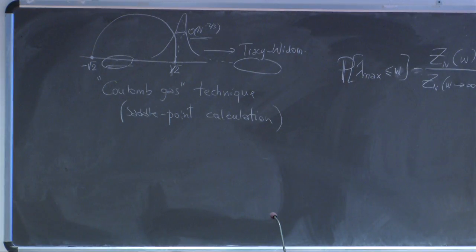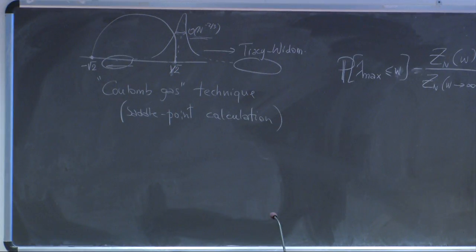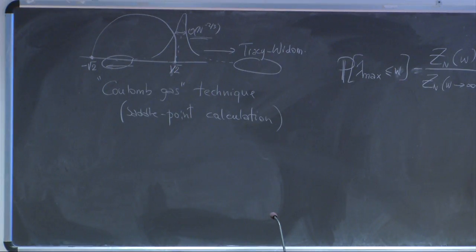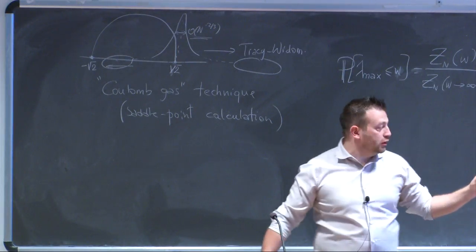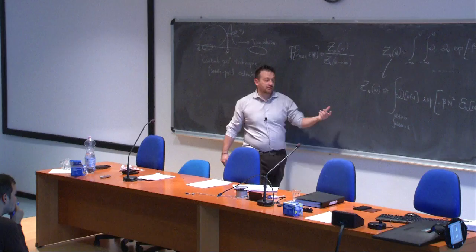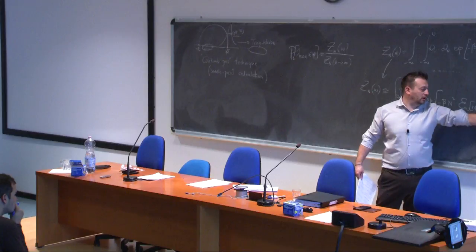Due to the long-range structure of the interactions between particles, this factor here is not n as in standard short-range models. This means the free energy of this gas is not extensive as we are typically used to seeing, but is super-extensive — it goes as n squared, not just n. In particular, the entropic contribution to the free energy is sub-leading for large n, so the entropy is always extensive.